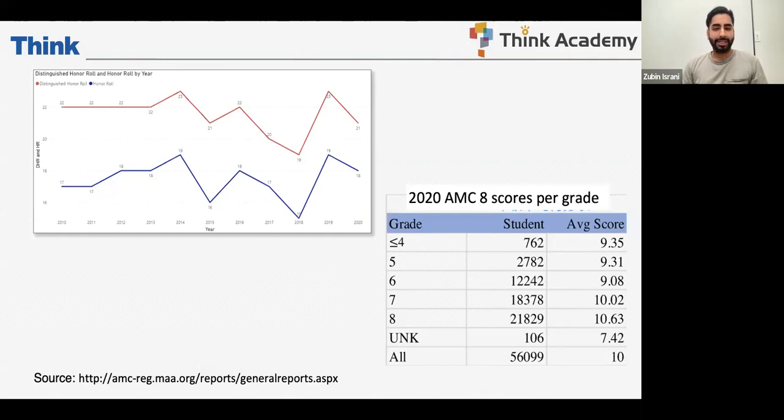Now, you might be wondering, why is the average score for grade six lower than the average score for grade five or grade four? Well, if you are taking this test seriously at an early grade, then you are more likely to have a gifted child or child who's already doing wonders at school, which is why you even opt to take it in the first place. That is why the score for grade four and grade five is actually slightly higher on average than somebody who takes it in grade six.